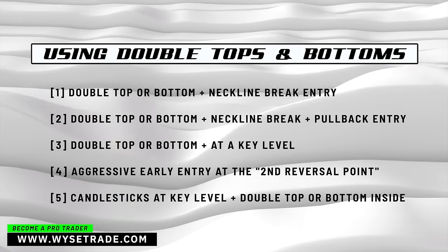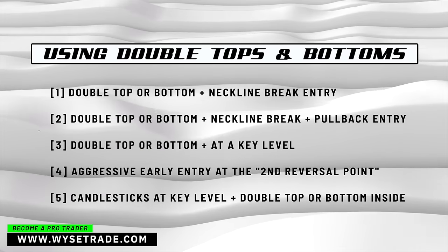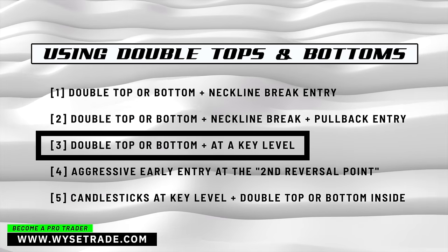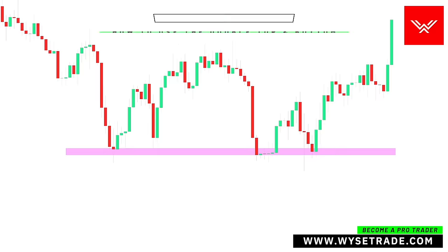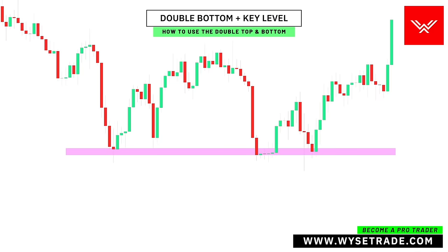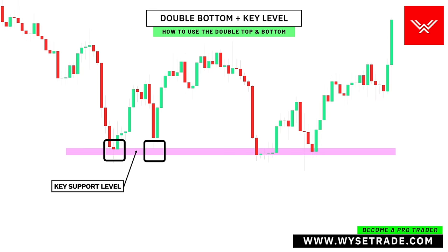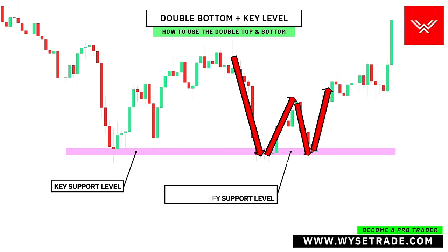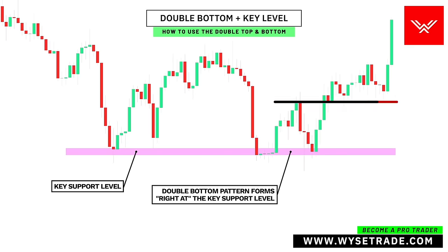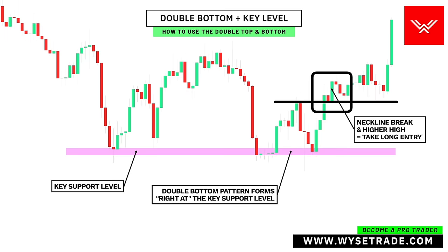The third way to use double tops and bottoms is to combine them with key levels. You first identify your key support level through these reversal points. As price comes back down, it creates a double bottom pattern right at the support level. To confirm the reversal, neckline placed like this. And once price breaks through the neckline, it makes a higher high — you would take a long entry.